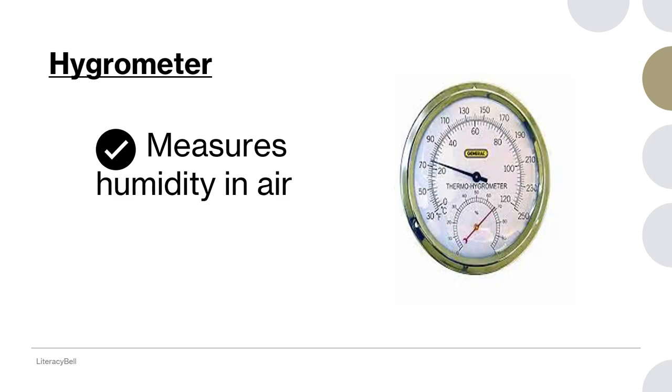Hygrometer. Hygrometer measures the humidity in air. What is humidity? Humidity is the water content in air. Water content means the moisture, amount of moisture in the air. It is measured with the help of hygrometer.